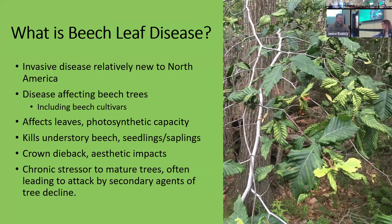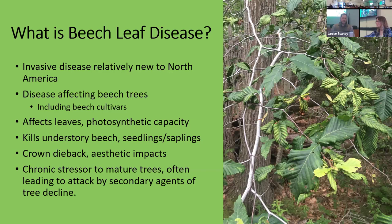Beech leaf disease, no surprise, affects leaves, and it really changes the leaves' function — how they use water and their photosynthetic capacity. It's a long-term, chronic stressor, and as time goes forward with an infected tree, the trees eventually die due to a lack of resources. Most of the mortality happens in the understory, at least first. In places that have had beech leaf disease for a longer time, it eventually moves up into the overstory and will kill mature beech.